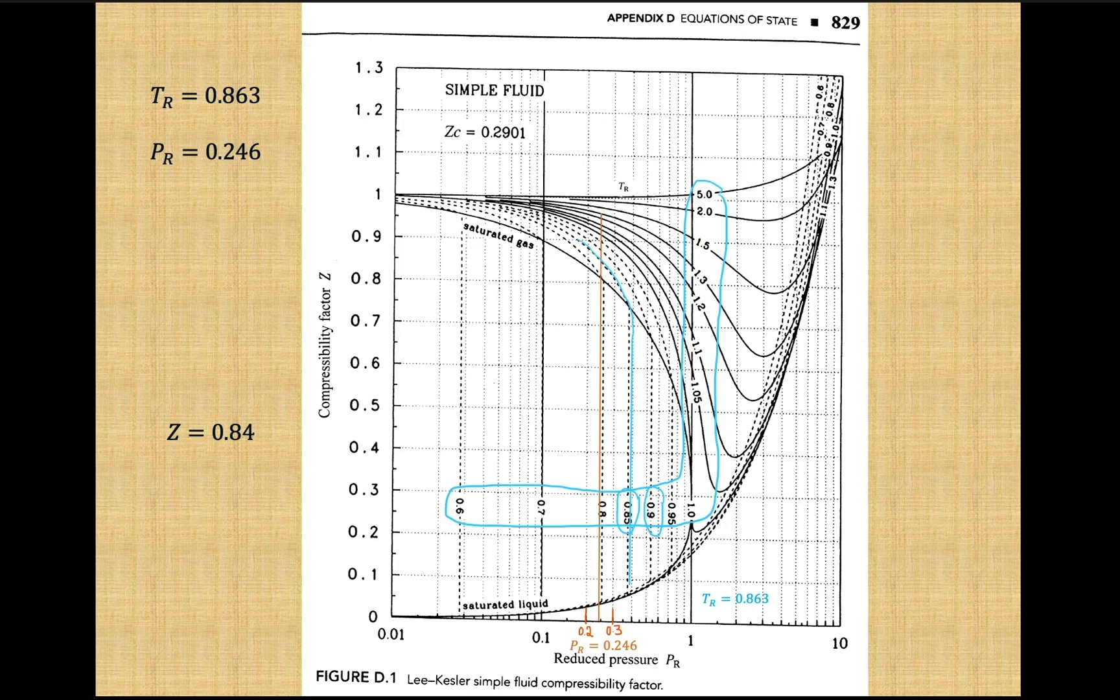The intersection can then be found right here. We will now trace from this point to the y-axis to get our compressibility factor value. Here we see that the compressibility factor is 0.84.